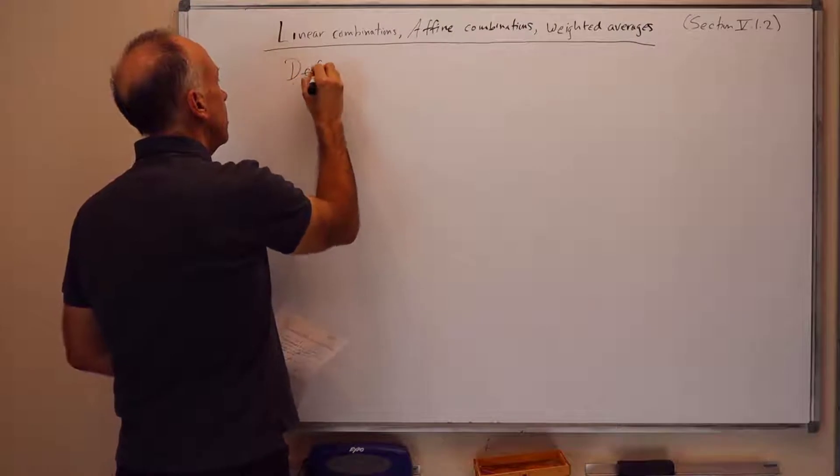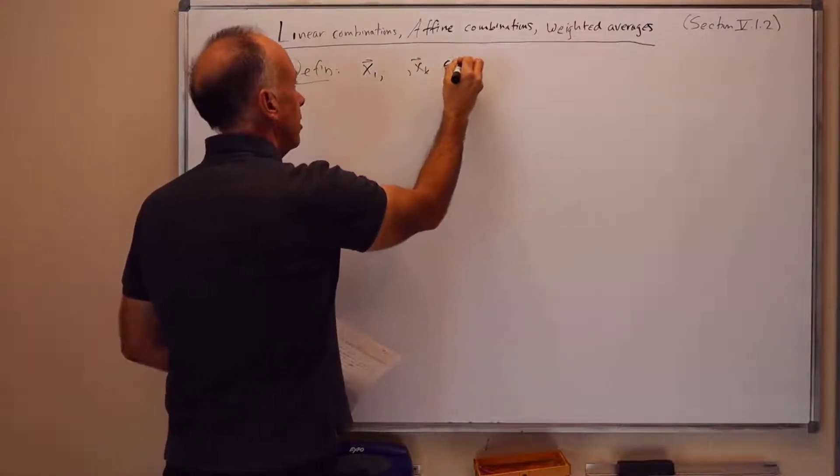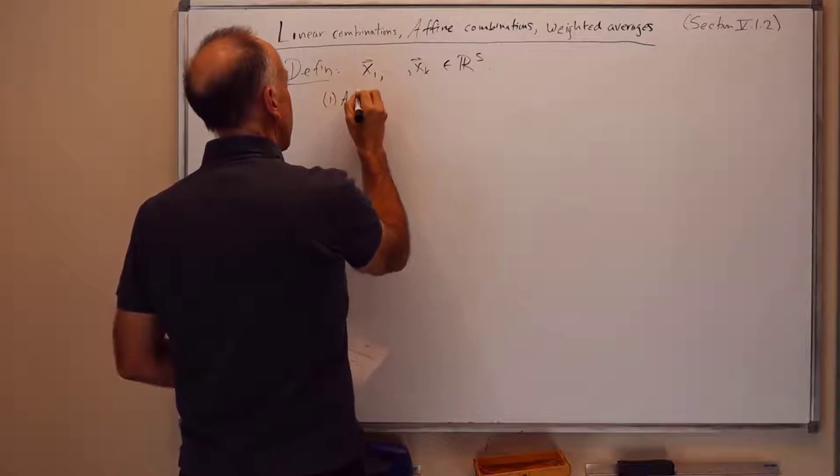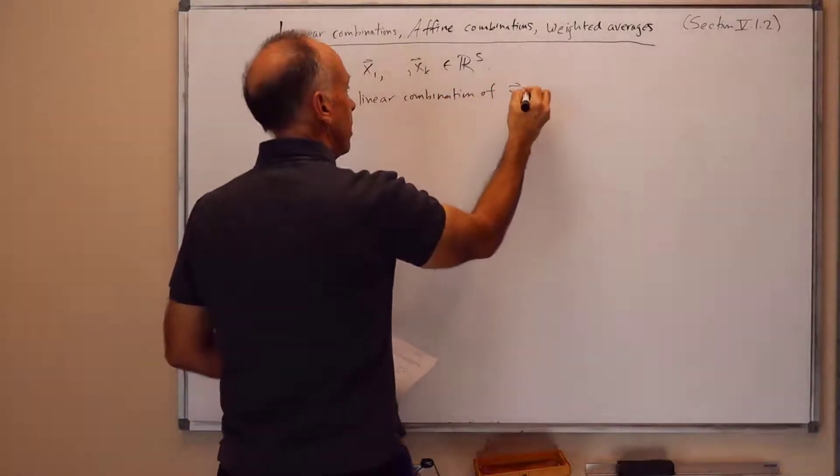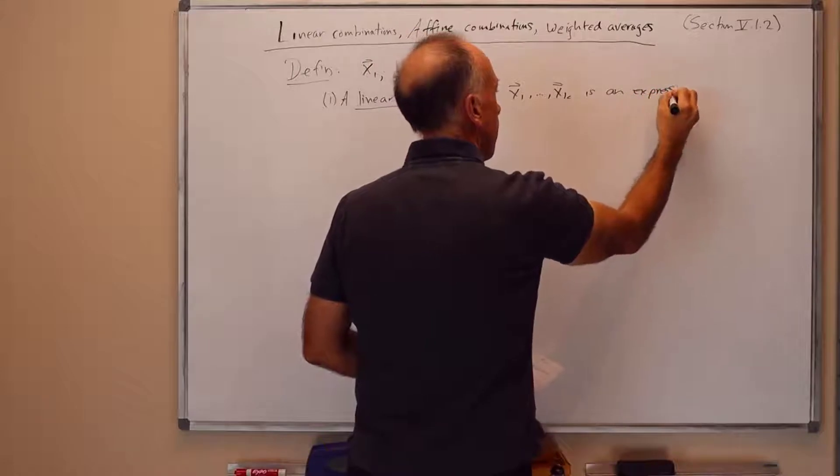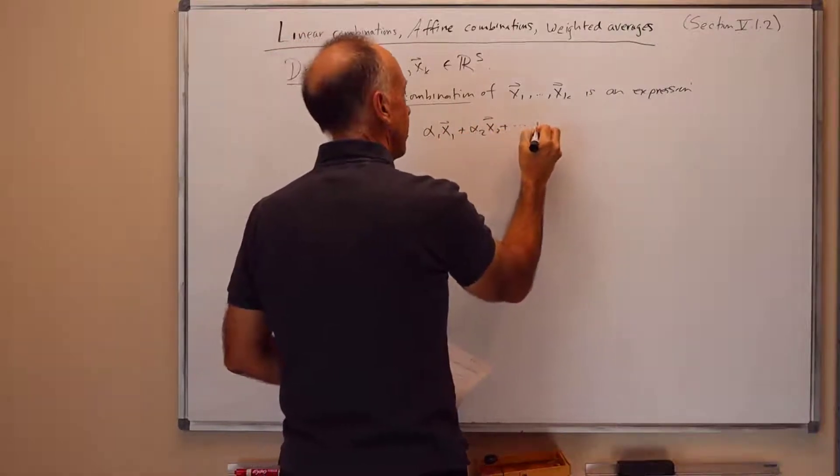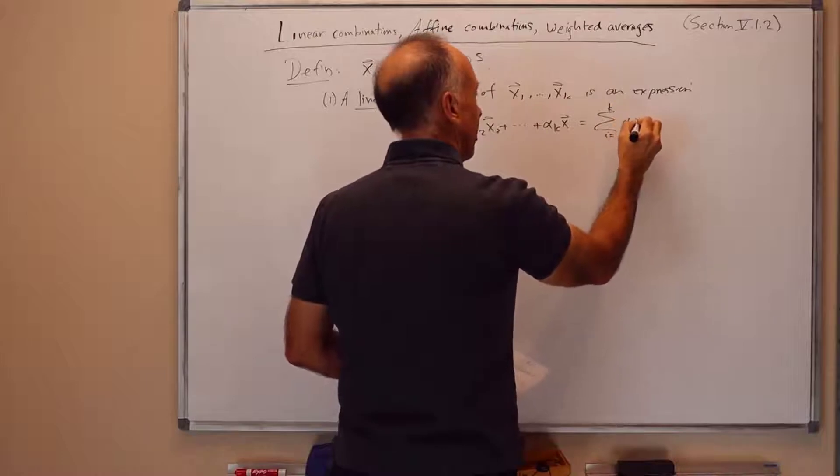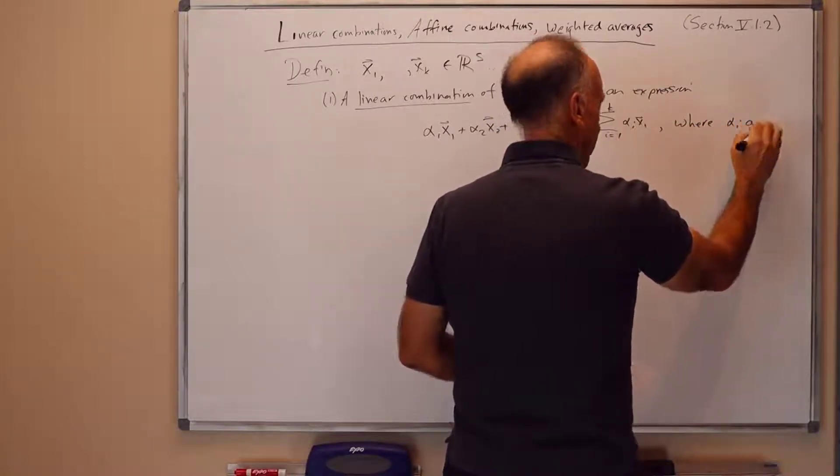First of all, some definitions. For these definitions, we'll let x1 through xk be points in Rs for some s greater than or equal to 1. The first definition is a linear combination of x1 through xk is an expression of the form alpha 1 x1 plus alpha 2 x2 plus dot dot dot alpha k xk, which we can also write in shorthand notation as the summation of i equals 1 to k of alpha i xi, where the alpha i values are scalars, they're real numbers.